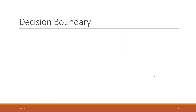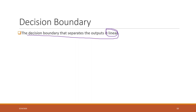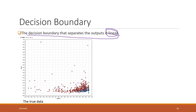Next, let's talk about the decision boundary. For classifications, we can visualize the decision boundary, which is a boundary that separates the output. For logistic regression models, the decision boundary is linear. Looking at the true data, blue means not a single-family home and red means it is a single-family home.